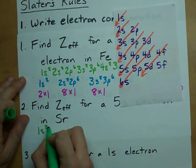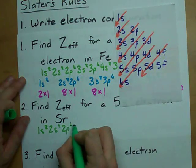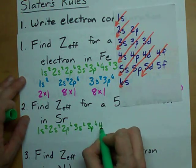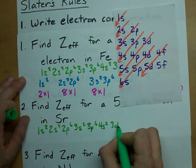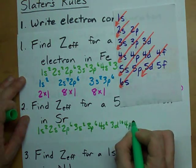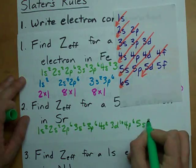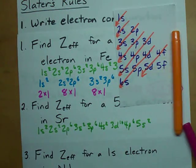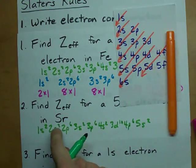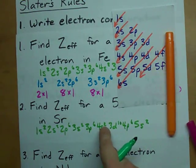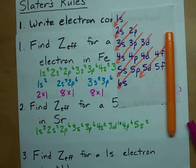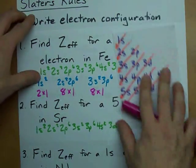1s2, 2s2, 2p6, 3s2, 3p6, 4s2, 3d10, 4p6, 5s2. That takes me to 38 electrons, I believe. 2 and 2, 10, 12, 18, 20, 38 electrons. Who's awesome? I am.